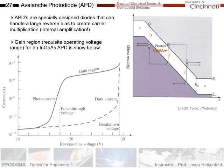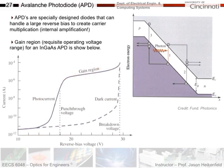How can we do better? One way is to move to an avalanche photodiode, or APD. These are specially designed diodes that handle a large reverse bias, creating a very strong electric field. When a photon comes in and generates an electron and a hole, those carriers experience so much energy that they can excite additional electron-hole pairs — and so on. So one photon can create one electron-hole pair, which then generates more pairs, resulting in multiple carriers out for a single photon. In the gain region, the current out goes up by orders of magnitude due to this amplification effect.